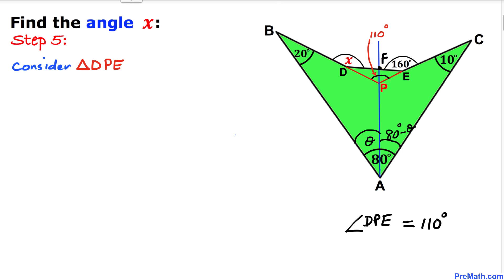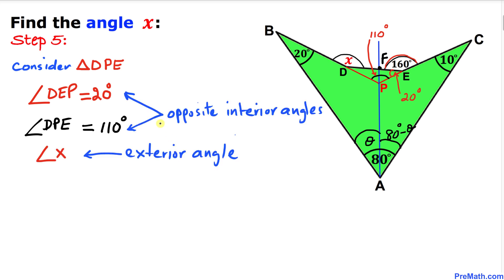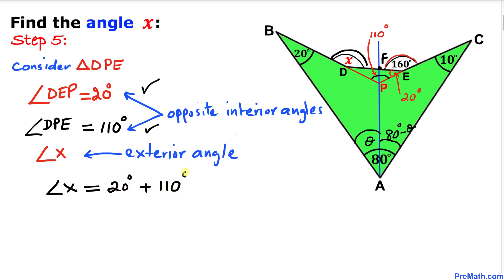Now focusing on the small triangle DPE, we know one angle is 160 degrees. The adjacent angle DEP is going to be 20 degrees because they are supplementary — they add up to 180 degrees. So angle DEP is 20 degrees, and angle DPE is 110 degrees. These two are our opposite interior angles, and angle x is our exterior angle. By the exterior angle theorem, angle x equals 20 degrees plus 110 degrees.